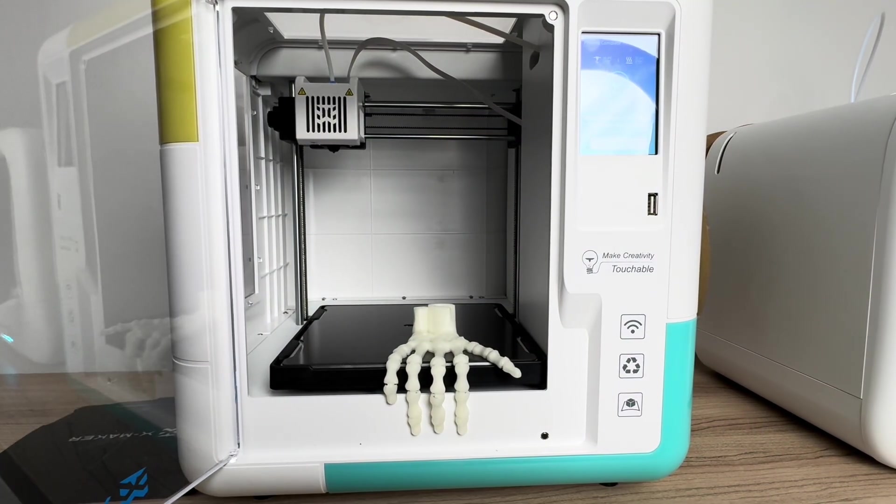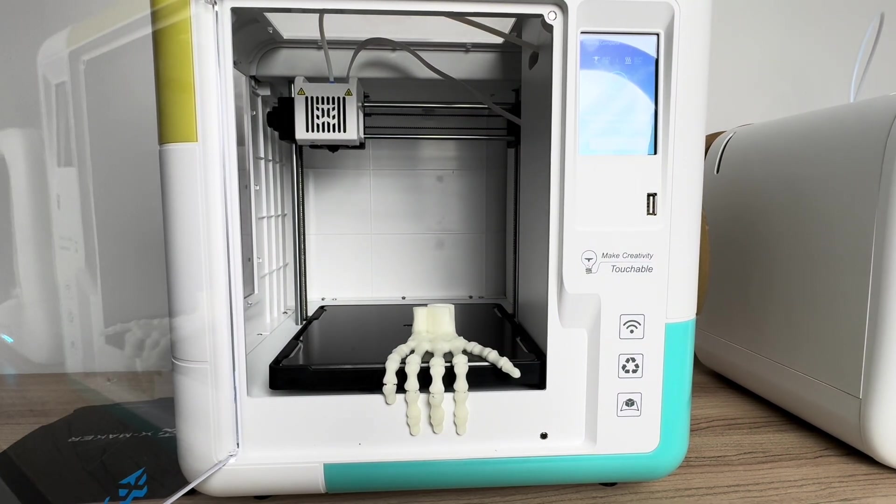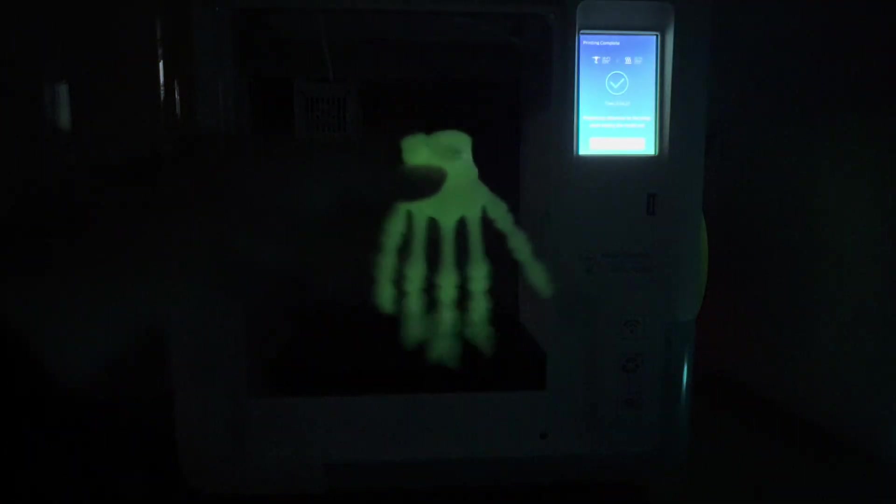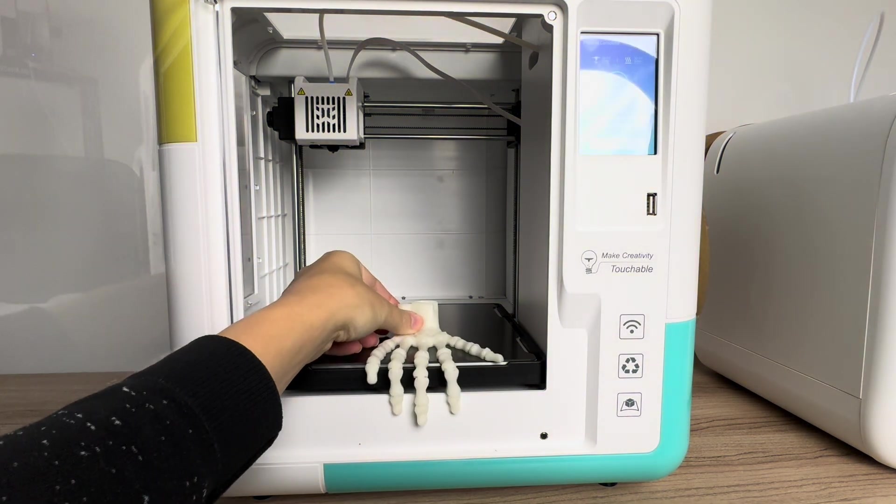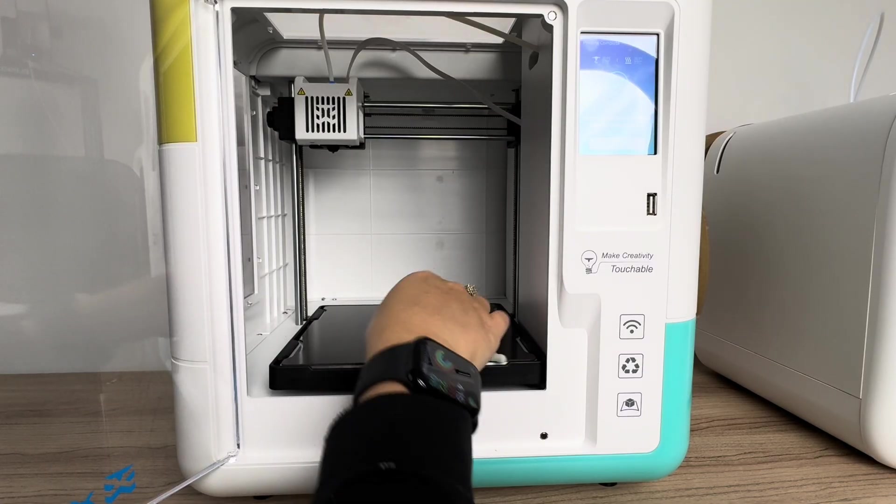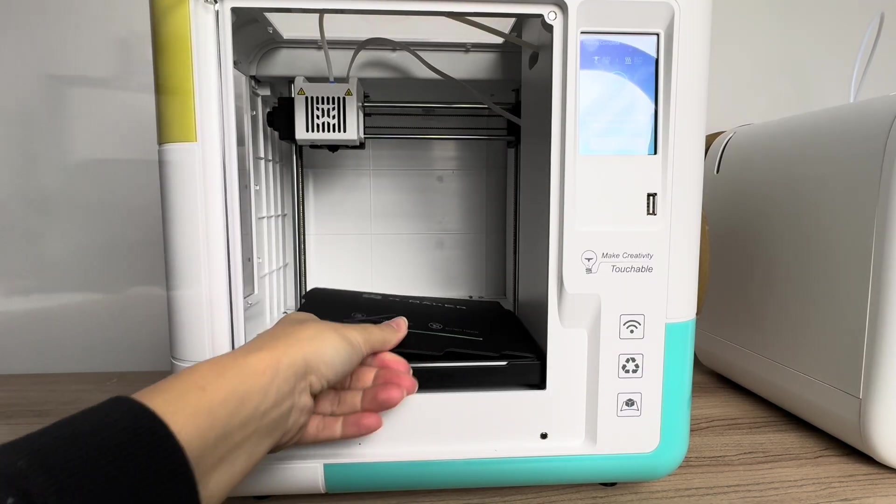So let's see how it looks in glow in the dark. So cool. This PLA filament is super fun, great for Halloween. I really like it. I'll leave the link to the PLA in the comments. I hope you enjoyed this tutorial and let me know what you print in the comments.